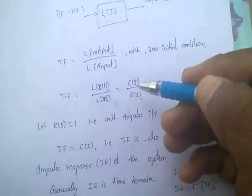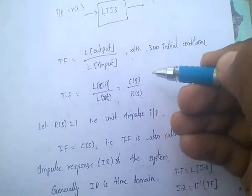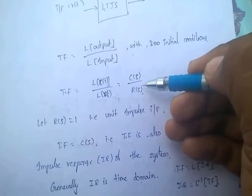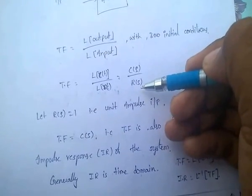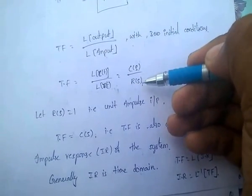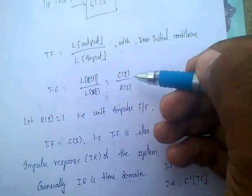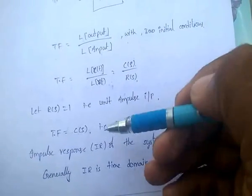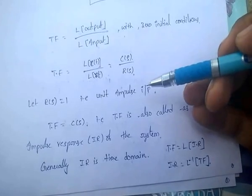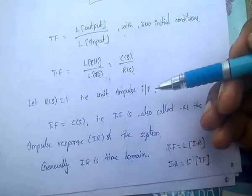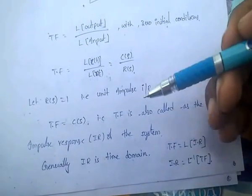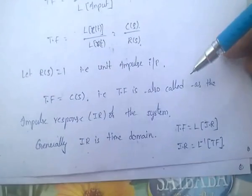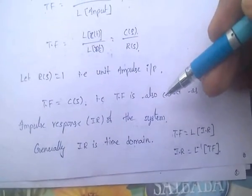If R(s) equals 1, that means the input is a unit impulse input. If R(s) equals 1, then transfer function equals C(s). Therefore, the transfer function is also called the impulse response of the system.